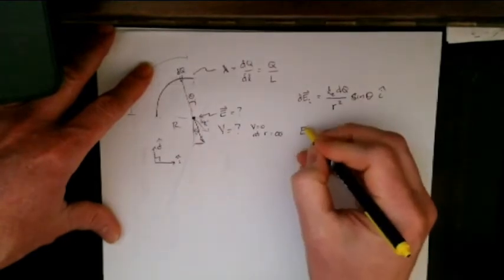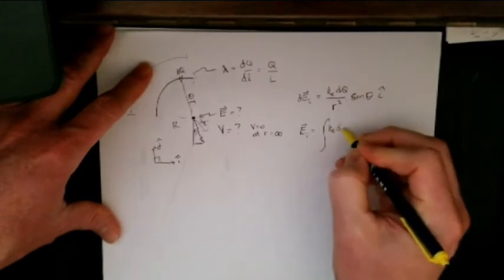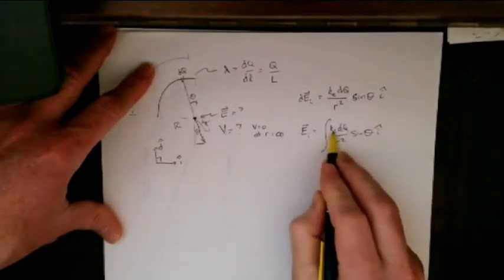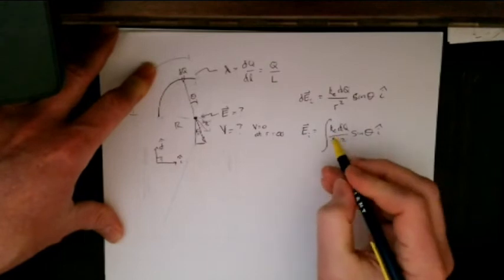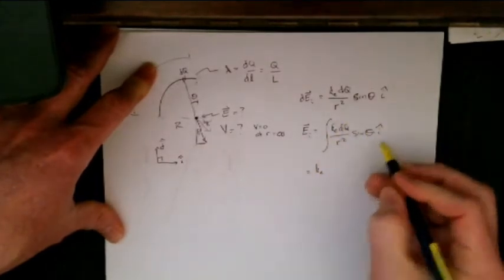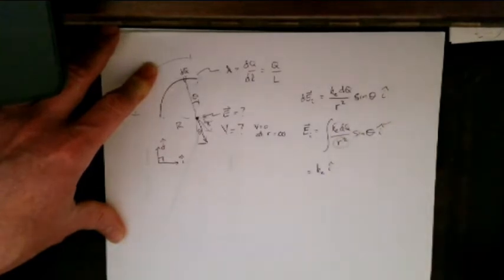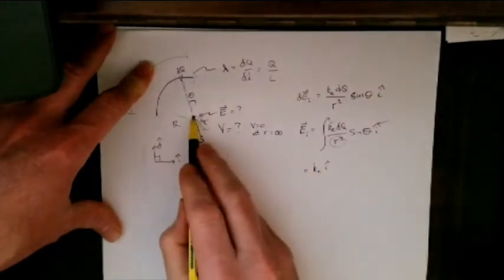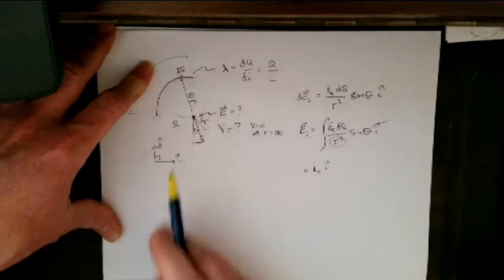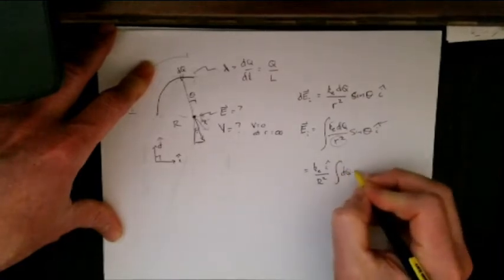So my electric field in the i-direction is going to be the integral of KE·dQ over R squared times sine theta, i-hat. I can bring the constants out: KE is the electrostatic constant, or Coulomb's constant, so that comes out. I-hat is constant, so that comes out. R squared is constant in this case, because the distance from anywhere along this line of charge to the point in question is the same distance. So what I'm left with is just the integral of dQ sine theta.